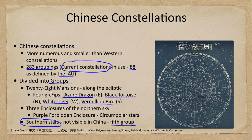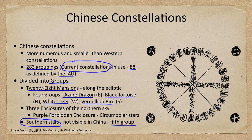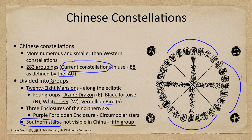These 28 mansions were then divided into seven groupings, so each of the four creatures had seven associated constellations. You can see in the image here — seven in one direction, seven here, seven here, and seven here — making those 28 groupings, each associated with one of the four creatures.